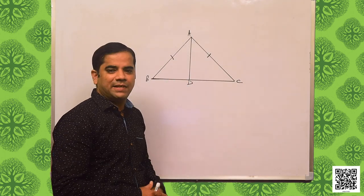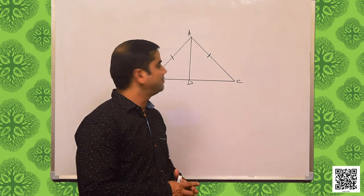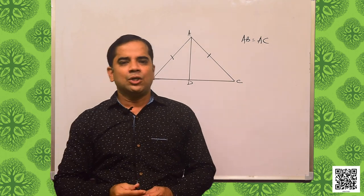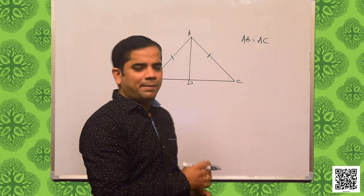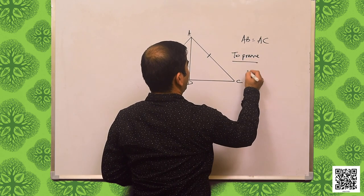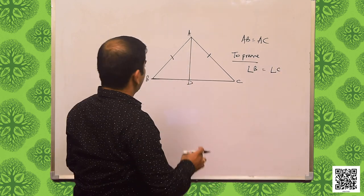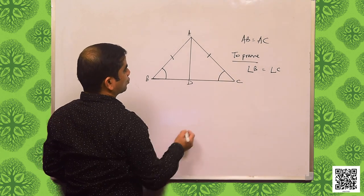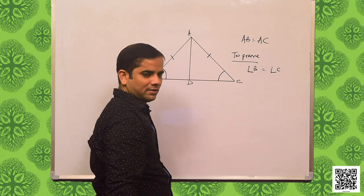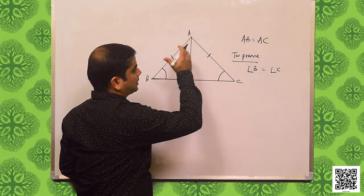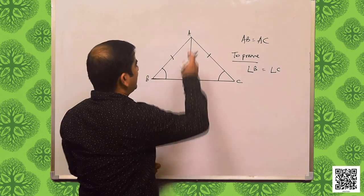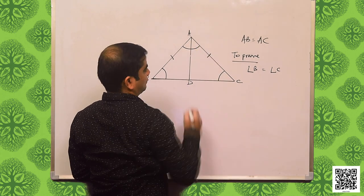I have constructed a triangle ABC as given in your book. As per the given data, AB is equal to AC. This is the isosceles triangle where two sides AB and AC are equal to each other. What we need to prove is: angle B is equal to angle C. Angle B is the angle facing side AC, and angle C is the angle facing side AB — that is, angle B is opposite to side AC and angle C is opposite to side AB. As you can see in the figure, AD is the bisector of angle A, which we need to construct.